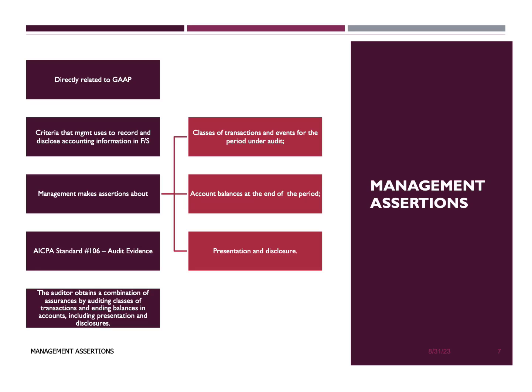Assertions about transactions and events relate to the income statement and the activity throughout the year for the period under audit. Assertions about account balances relate to the ending balances in the accounts reflected in the company's balance sheet. Finally, presentation and disclosure assertions relate to the presentation of information within the financial statements as well as the included disclosures.